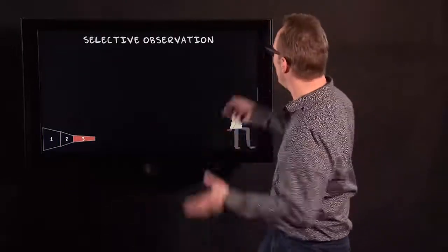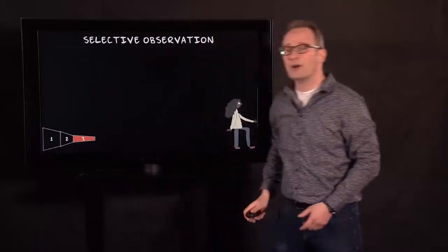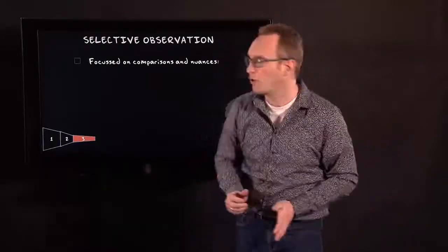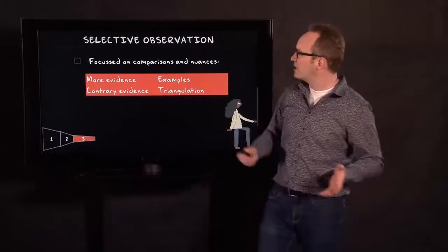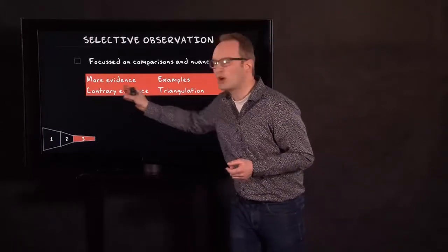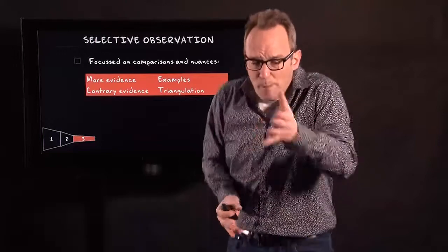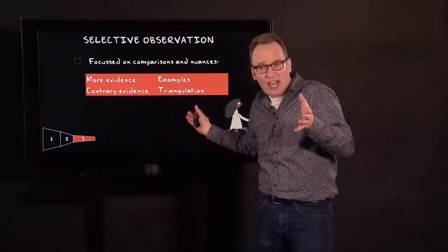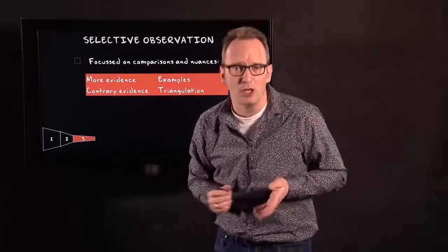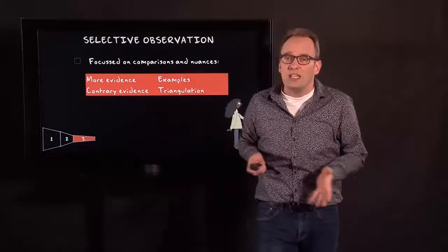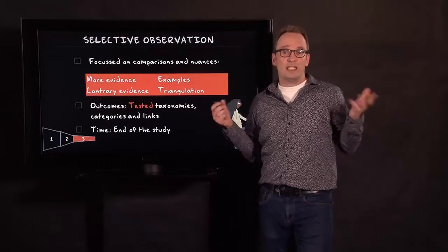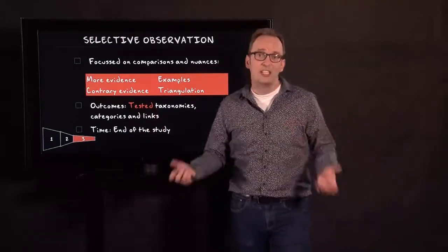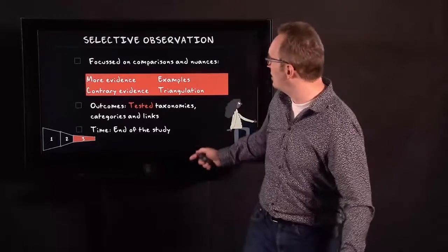The last type of observation is selective observation — it's the last part of the funnel. It's where you start walking instead of riding or driving. This part of observation is even more focused, and it's focused on comparisons and nuances — for instance, looking for more evidence or contrary evidence. It's especially important to see how some people act one way but others act differently. You have to start finding examples and triangulate with other material — maybe documents, someone else's observations, or interviews and conversations. The outcomes of selective observation are taxonomies, categories, and links — and in this phase, they are tested. The relations and taxonomies are tested because you are looking for contrary evidence, and this happens at the end of the study.